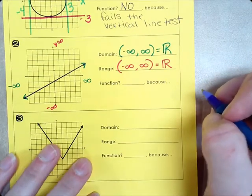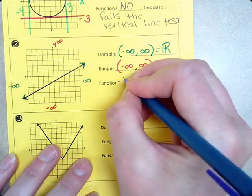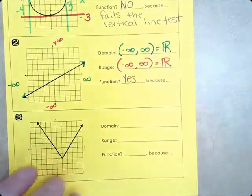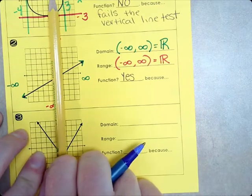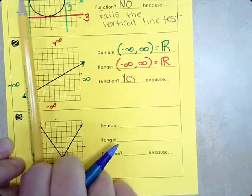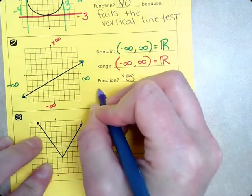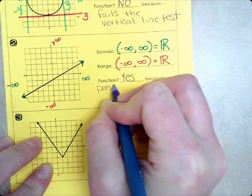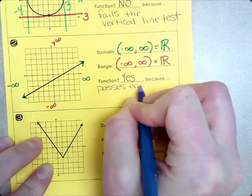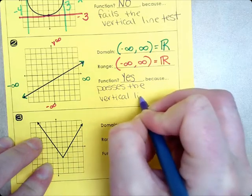Is this a function? Yeah. It's a line. It's going to pass the vertical line test. It's only touching my pencil once. Every time that I go down. So, it's yes because passes the vertical line test.